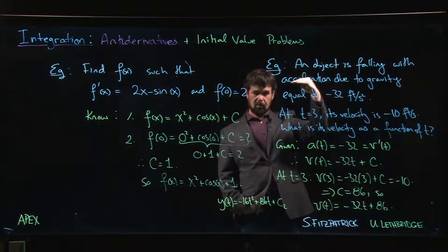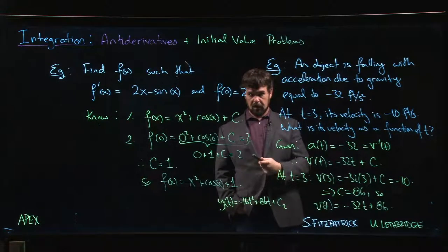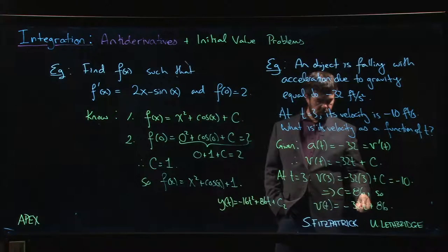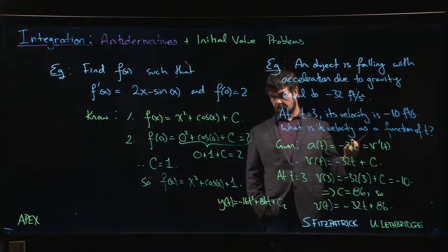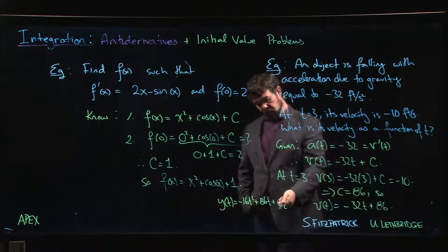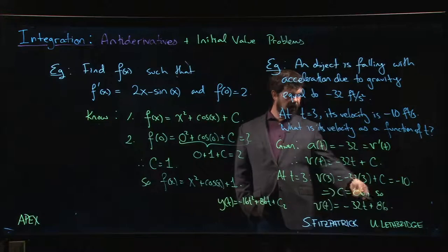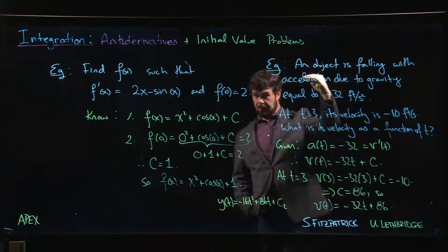We know that a maximum happens when a derivative is zero. Velocity is the derivative of position, so if we know when the velocity is zero, then we know the time at which that thing hit its peak height. If we knew the value of this constant C2, we can take that value, 86 over 32, plug it into here, and we could figure out just how high it made it.